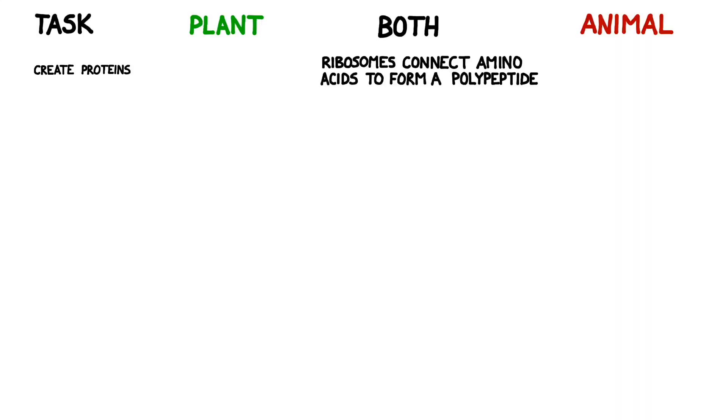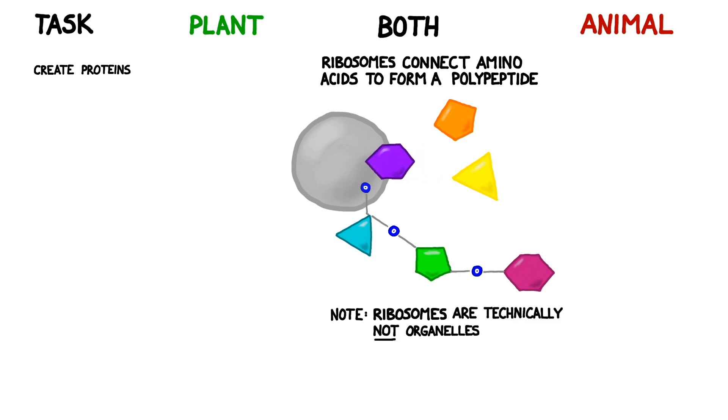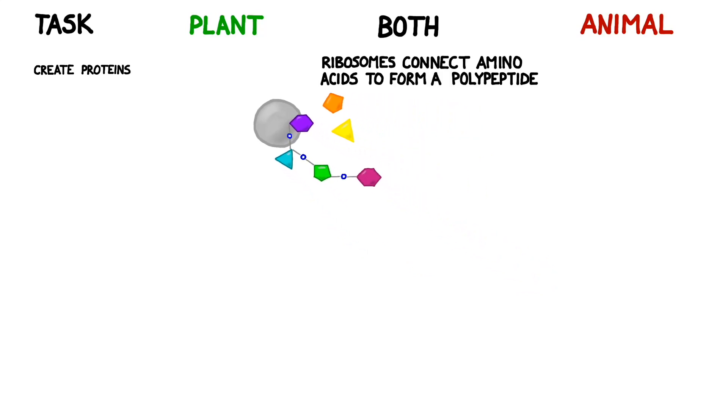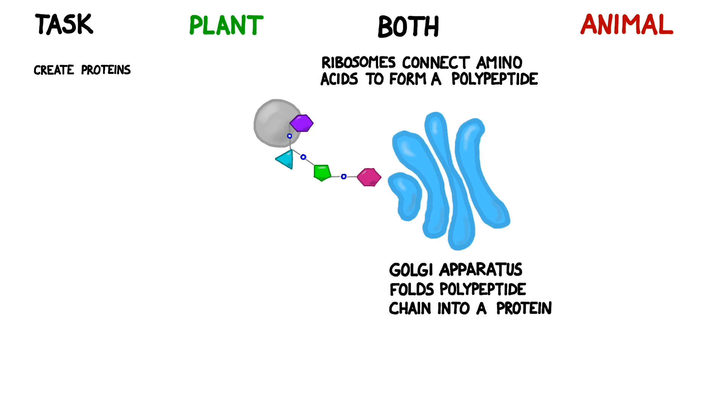When it comes to creating proteins, ribosomes string together amino acids with peptide bonds. Even though they're really important, ribosomes are technically not considered to be organelles because they're not membrane bound. The Golgi apparatus then takes this long polypeptide chain created by the ribosomes and folds it up into a protein.